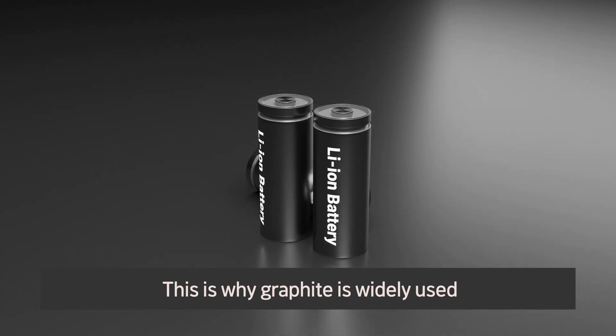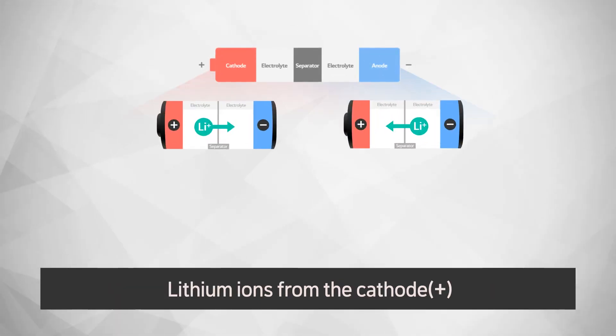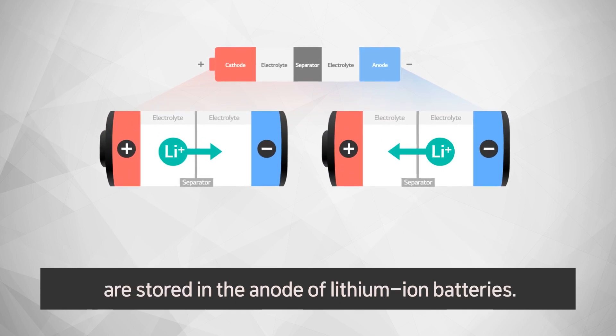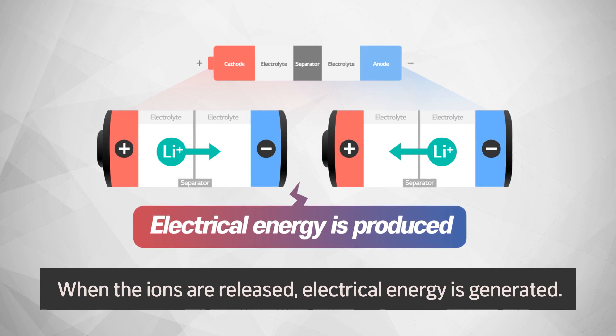This is why graphite is widely used as an anode material for lithium-ion batteries. Lithium ions from the cathode are stored in the anode of lithium-ion batteries. When the ions are released, electrical energy is generated.